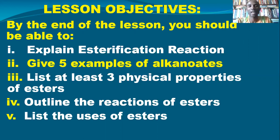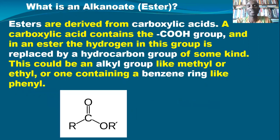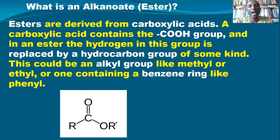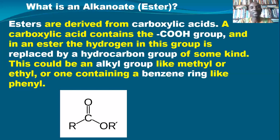Now let's start with what Alkanoids or Esters are. What is an Ester or what is an Alkanoid? First of all, Esters are derived from Carboxylic Acid. A Carboxylic Acid contains the COOH group. Esters are derived from Carboxylic Acid — the Carboxylic Acid has this formula, a functional group: the COOH group.